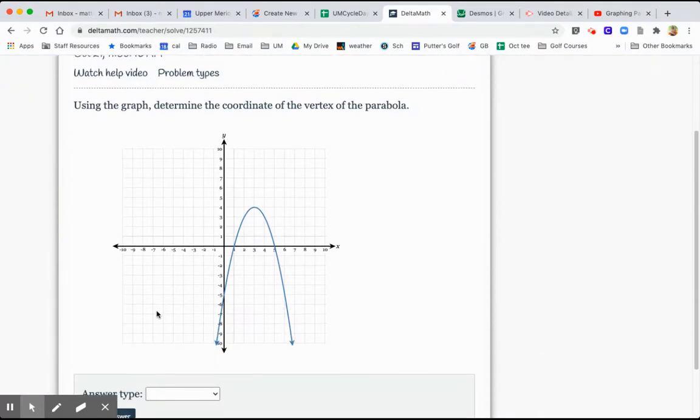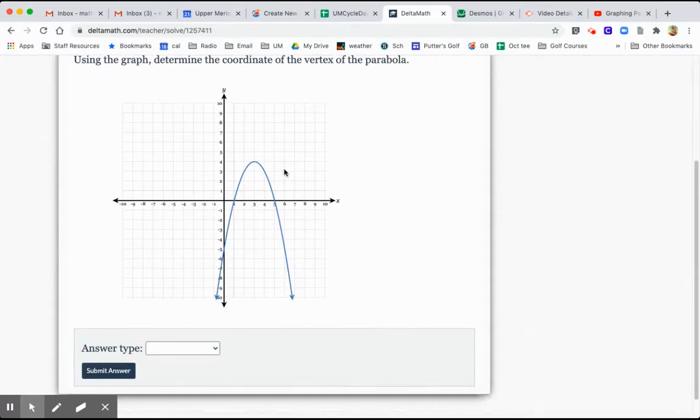Here it is. Find the coordinate of the vertex. Now, of course, the vertex is this singular point here where the left and right side come together. It's also, in this case, a maximum point. It's the highest point on the graph.